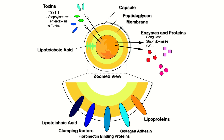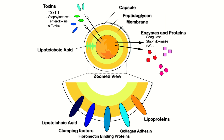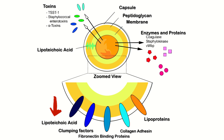The cell membrane has certain toxins released by this bacteria, like toxic shock syndrome toxin type 1, staphylococcal enterotoxin, and alpha toxin. It has its capsule, then a peptidoglycan layer, then the membrane. There are also enzymes and proteins like coagulase and catalase. Components present in the cell wall include lipoteichoic acid, clumping factors, fibronectin-binding proteins, collagen adhesins, and lipoproteins.